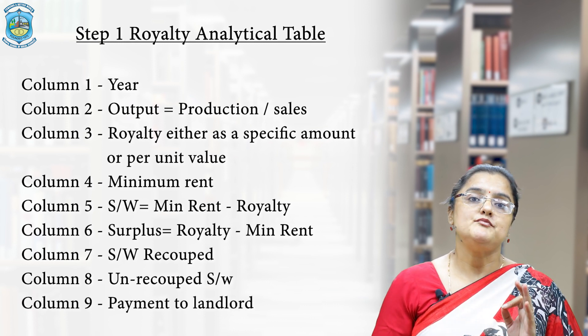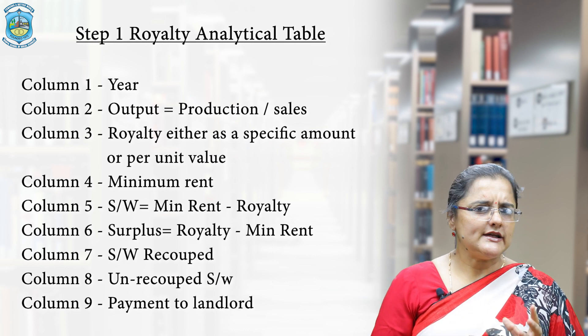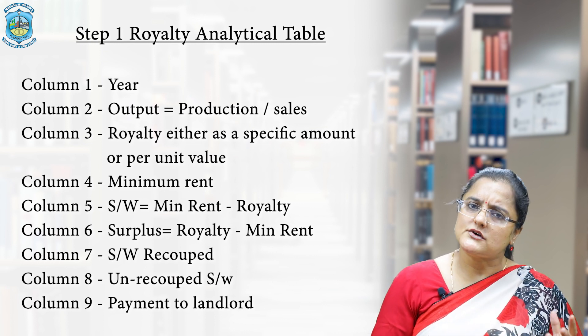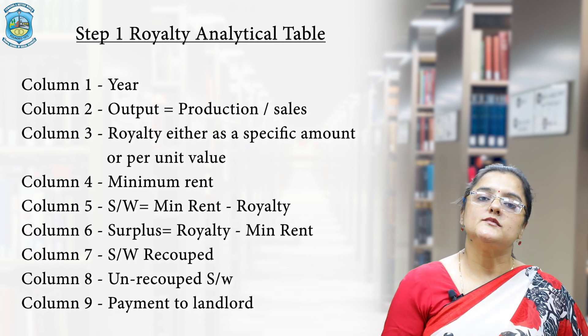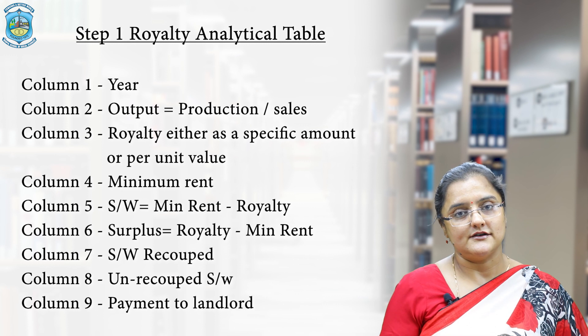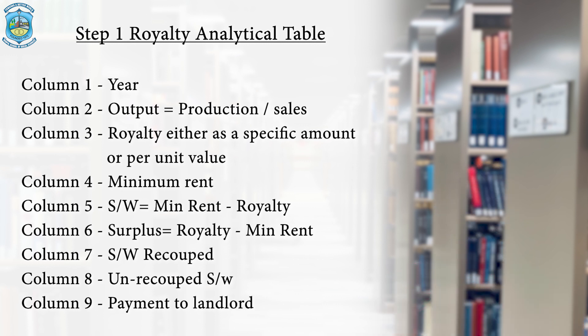For the landlord, column eight represents the amount he is not required to repay as royalty excess over minimum rent to the lessee, because the time period has expired. Column nine is a very important column for posting the correct payment entry to the landlord. It shows how much money is going from the lessee's bank account to the landlord — calculated by taking royalty or minimum rent, whichever is higher, minus the short working recouped from column seven.